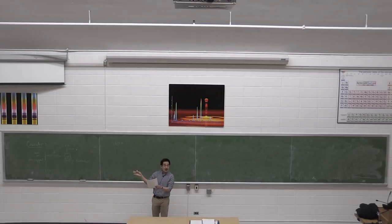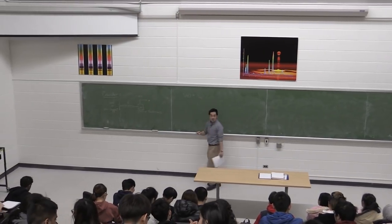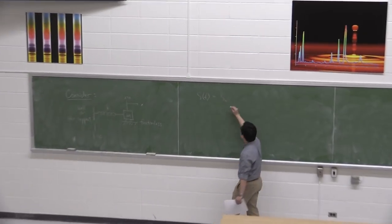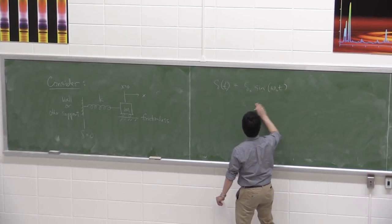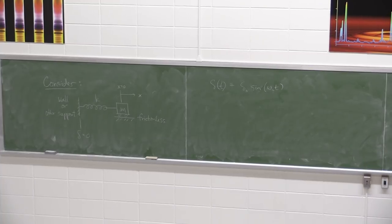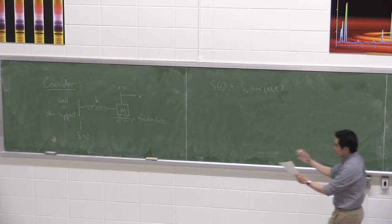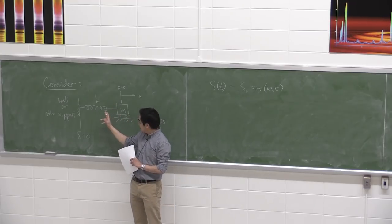The wall moves back and forth as a sinusoid, with an amplitude of δ₀ multiplied by sine(ω₀t). This is starting to look familiar — there's a second frequency that's different than the natural frequency of the system. So now we have to look at how this mass-spring system is going to react specifically.